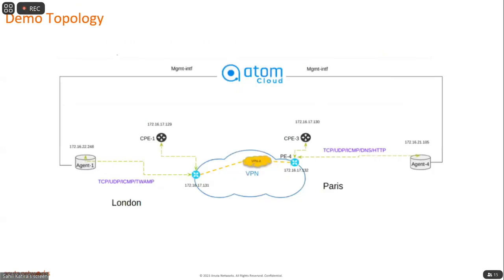Before running the test live on the demo lab, I want to walk through the topology being used today. There are two agents: a London agent and a Paris agent, with a VPN connection between them. These agents are also connected to the Atom control center via the management interface. This simple topology will be used to generate traffic between London and Paris to run the tests.